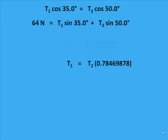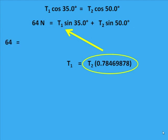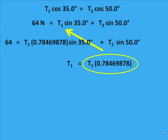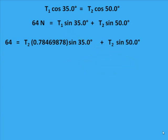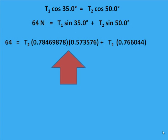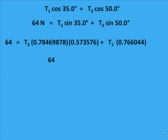I take T2 times that long number from the calculator and substitute it in for T1 in the vertical equation, because that's what T1 equals in terms of T2. What I end up with is: 64 equals T2 times sine 35 plus T2 sine 50. I now have one equation in one unknown. Working everything out, I find something times T2 plus something times T2, add them together, and get: 64 equals that long number times T2. I simply divide 64 by that number to find T2.